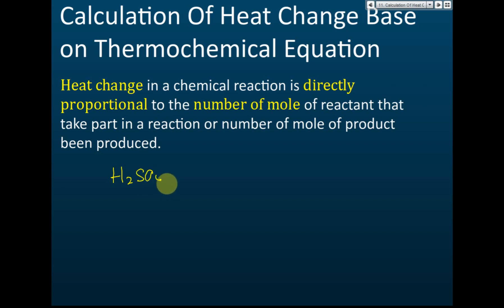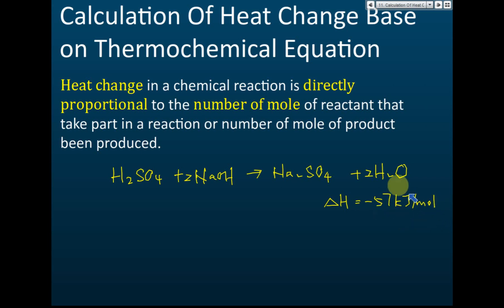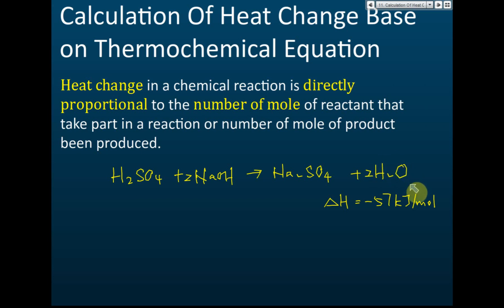H₂SO₄ reacts with sodium hydroxide to produce sodium sulfate and water, H₂O. The heat of reaction, delta H, is negative 57 kilojoules per mole. This 57 kJ/mol is per mole of water produced. Per mole of water means per one mole — so when one mole of water is produced, it releases 57 kilojoules.